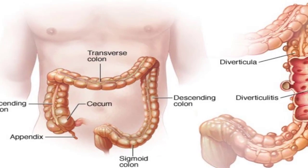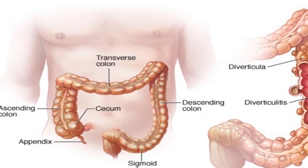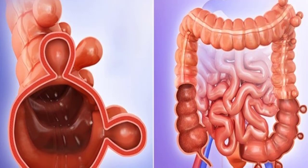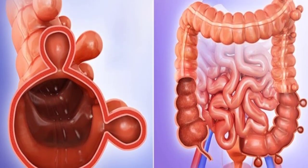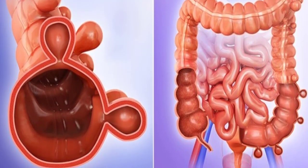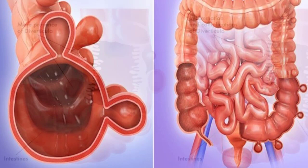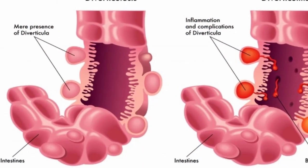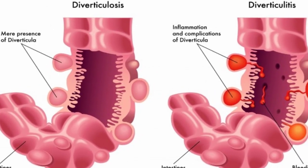In many cases, persistent pain specific to the lower left side of the abdomen is caused by diverticulitis. Diverticula are small pouches created from pressure on weak spots in the colon. They are common, and even more so after age 40. When a pouch tears, swelling and infection can cause diverticulitis.